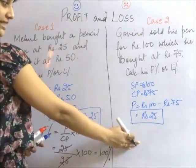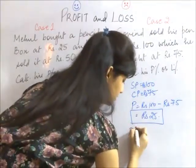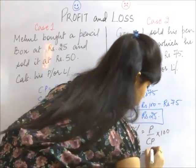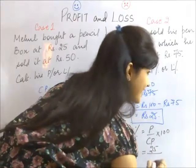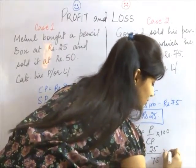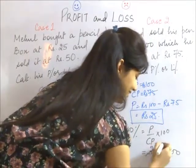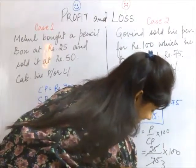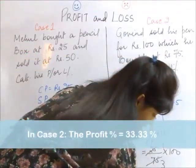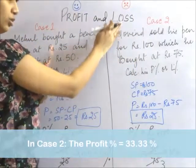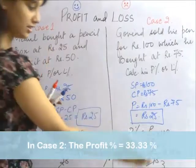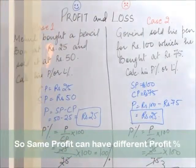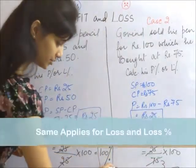Now coming to this example. Profit percentage is profit upon CP into 100 which is equal to 25 upon 75 into 100, which is 33.33%. Well, Govan, though he made a profit but in terms of percentage, he made only 33.33% of profit. While Mayul made 100% profit.